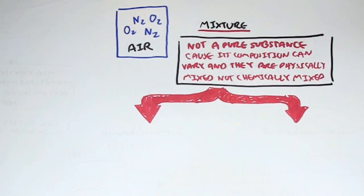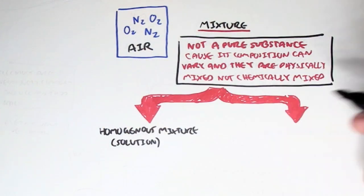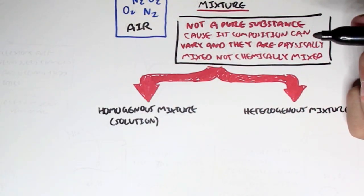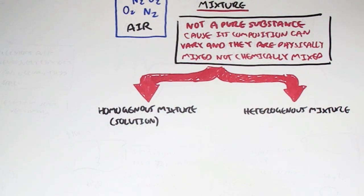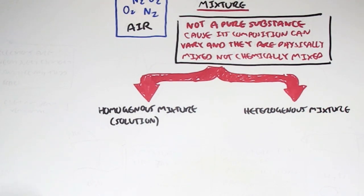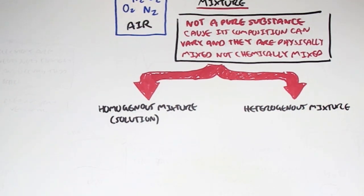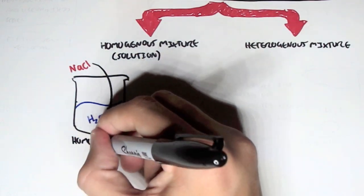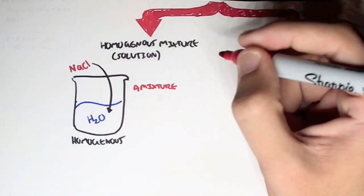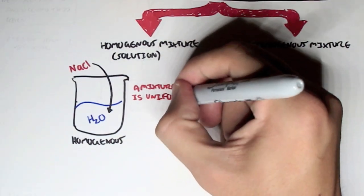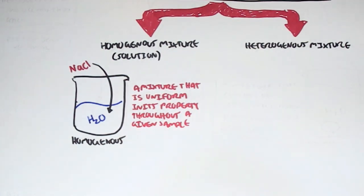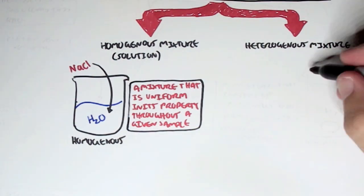A mixture can actually be divided into two categories also. A homogenous mixture, also known as a solution and a heterogeneous mixture. A homogenous mixture, a solution. A good example of this is if we have a substance of water in a jar and we add sodium chloride, salt into it. And this will form a homogenous mixture. A homogenous mixture, in this given example, is a mixture that is uniform in its property throughout the given sample. Salt and water are able to physically mix together.